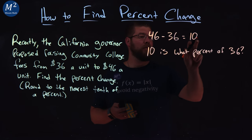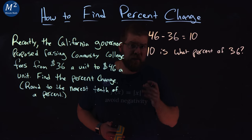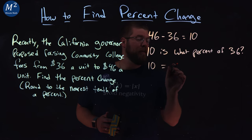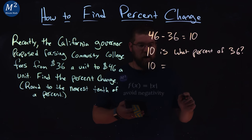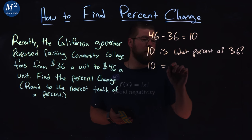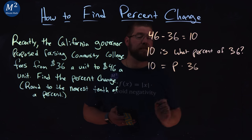So, 10, this new number, is what percent of 36? We can write that as an equation. 10 is equal to what percent of 36? P, we'll call that our percent, P times 36.